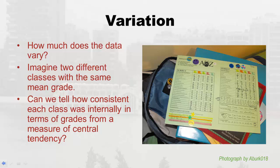Let's think about what variation even means — it means how much the data vary. Imagine I taught two classes, which I do, two different sections. I gave a quiz and the same mean grade was in each class. Could we tell how internally consistent those grades were? Say I gave a five-point quiz and the mean in each class was three. Maybe in one class people got a lot of fives and ones, and that's how we got the average of three. Maybe in the other class everybody just got three. We can't tell from a measure of central tendency — median, mean, or mode — how internally consistent the data are. Two different classes can have the same mean and a totally different kind of variation behind the scenes.